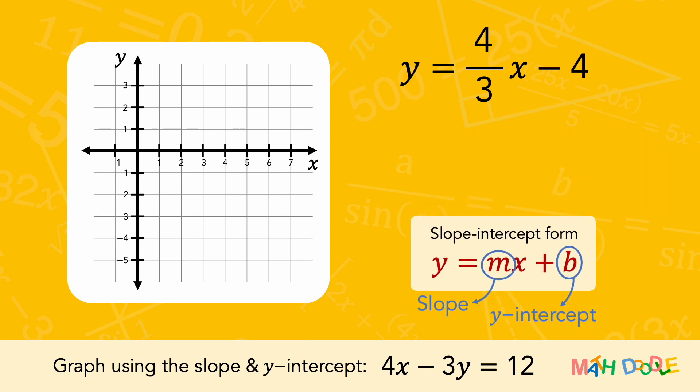So, by comparing this equation with the slope-intercept form, we can see that the equation has a y-intercept of minus 4. Also, we can write the y-intercept as an ordered pair. So, let's plot the y-intercept in a coordinate system.